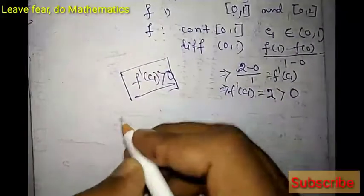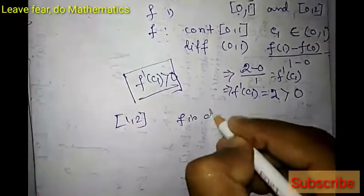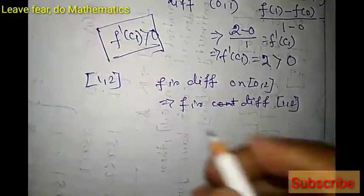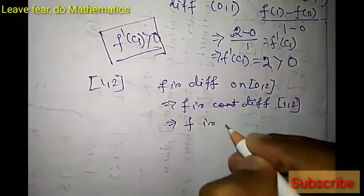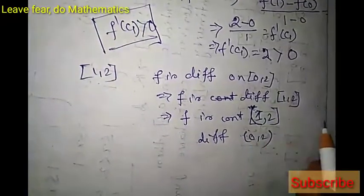Now we apply Lagrange's theorem on closed interval [1,2]. Since f is differentiable on [0,2], it is also differentiable on [1,2], and since it is differentiable on a closed interval it is continuous there. So f is continuous on [1,2] and differentiable on (1,2), satisfying the two conditions of Lagrange's Mean Value Theorem.